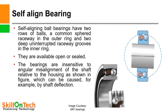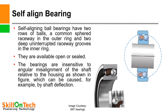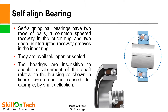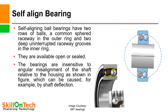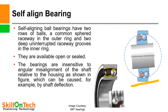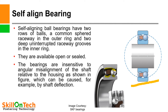A picture of a self-aligning bearing is shown here. Self-aligning ball bearings have two rows of balls, a common spherical raceway in the outer ring, and two deep uninterrupted raceway grooves in the inner ring. They are available open or sealed. The bearings are insensitive to angular misalignment of the shaft relative to the housing — which can be caused by shaft deflection. If a prime mover and pump have misalignment, these bearings will accommodate it.